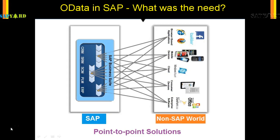Now coming back to the slide — what was the need for OData in SAP? Look at the picture. Say there was one interface to be built wherein SAP sent some response to a browser like Internet Explorer or Mozilla, or a mobile device or operating system. Look how many interfaces they have to create. Even though the response is the same, they still had to build three different interfaces. That made the industry giants think they should have something to reduce their labor, cost, and manpower.